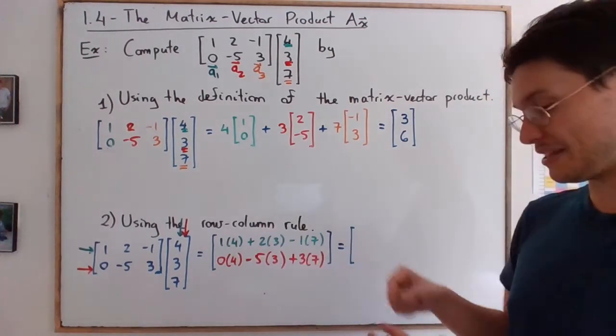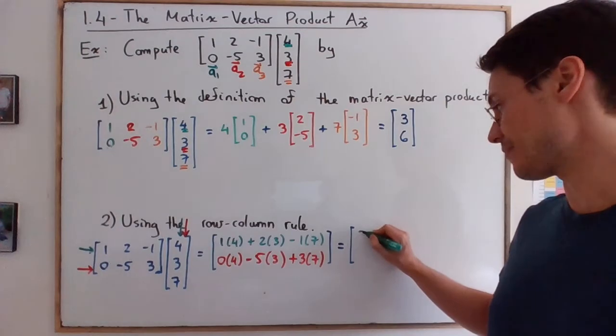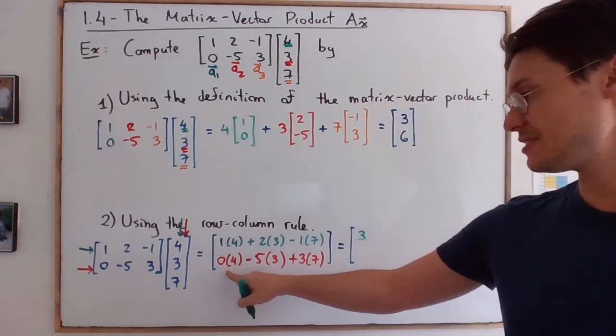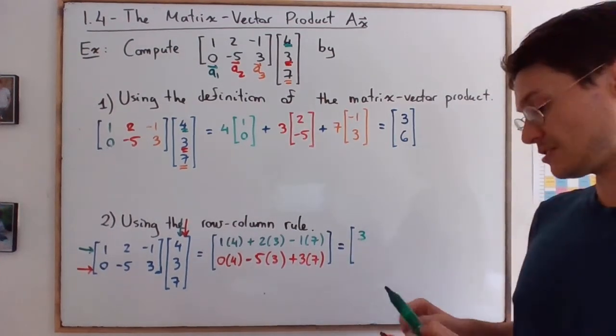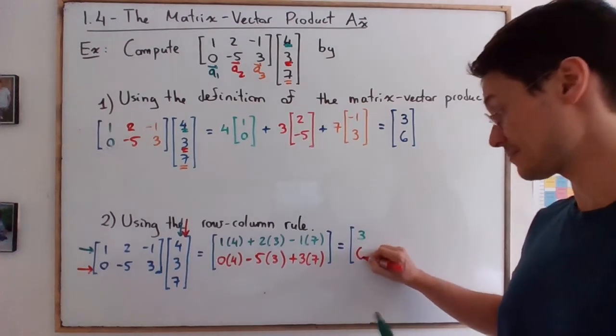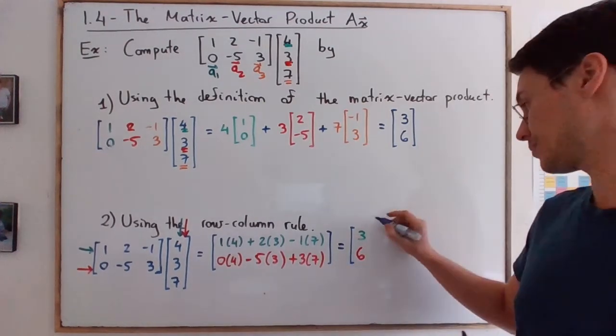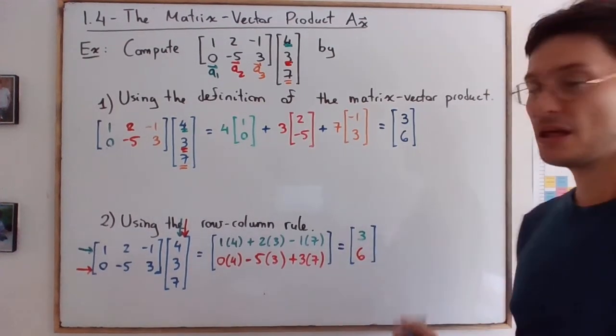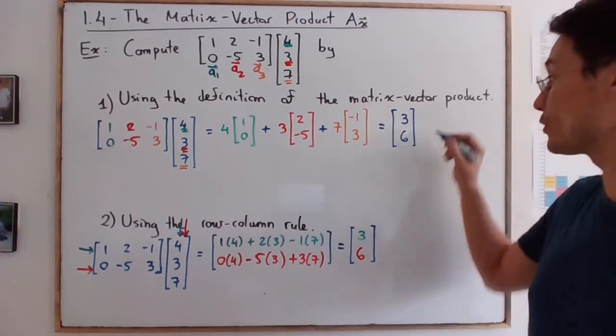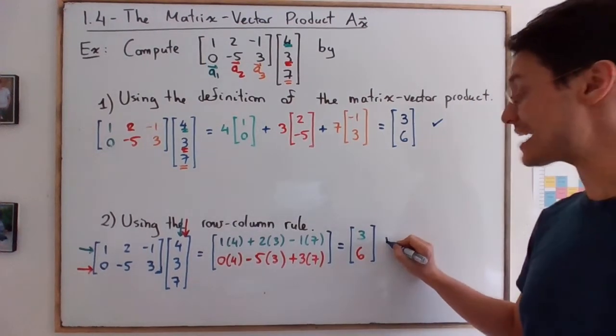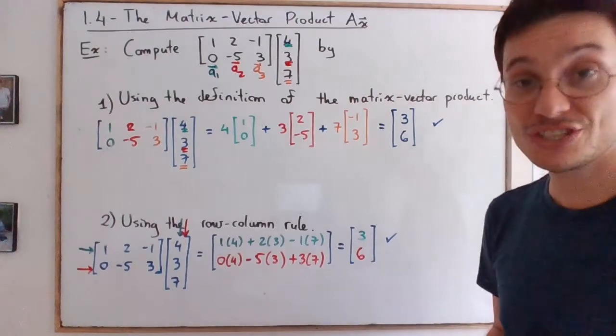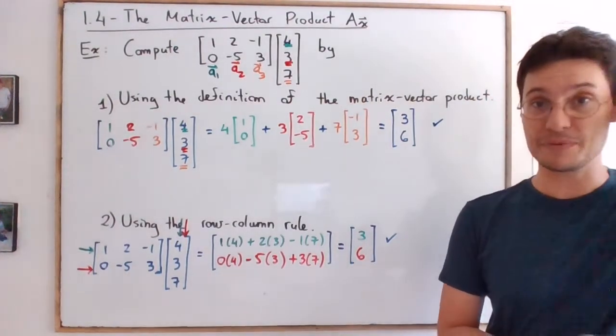Obviously, then you multiply it out and you get the result. So 4 plus 6, 10, minus 7, that's going to be 3 for the first component. And then 0 minus 15 plus 21, that's going to be 6. Notice that we're getting the same result as we should. It's just two ways of computing the same thing.